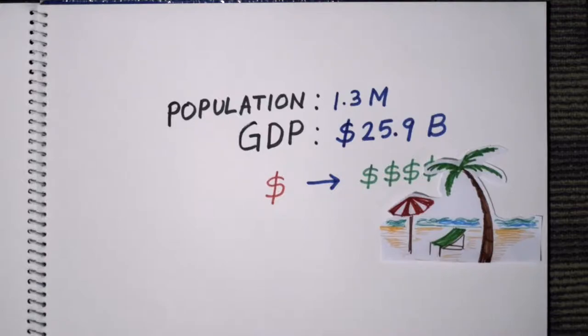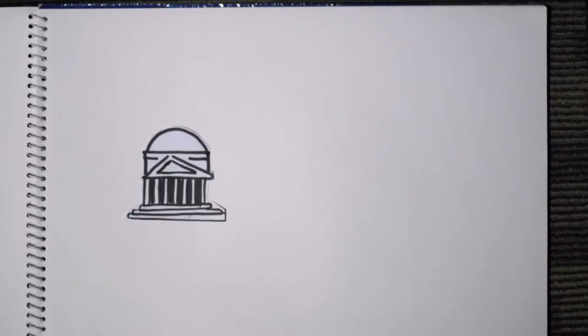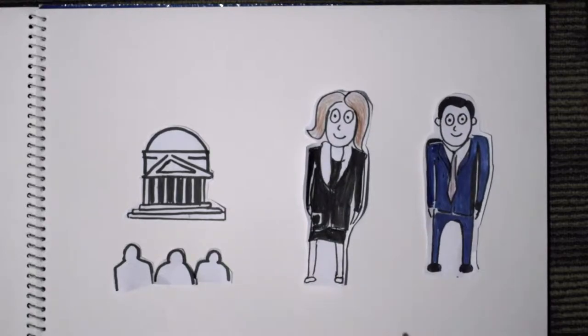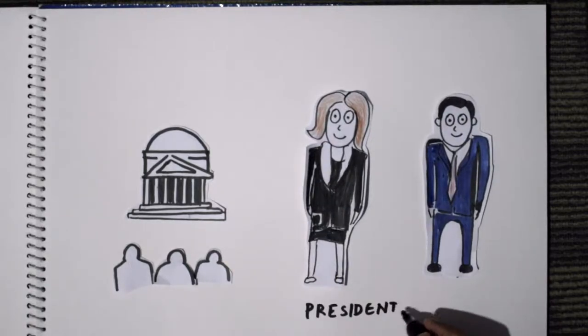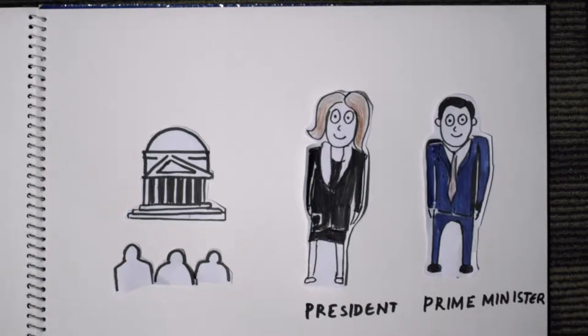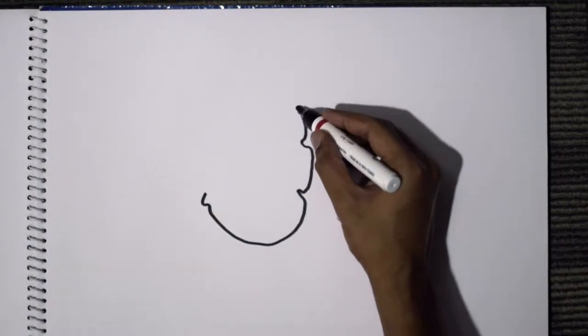Mauritius is a parliamentary democratic republic with a constitution of its own. The president is the figurative head while political power and accountability lies with the prime minister. The Mauritian population is highly diverse in nature.